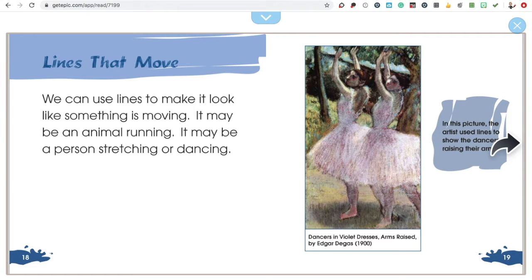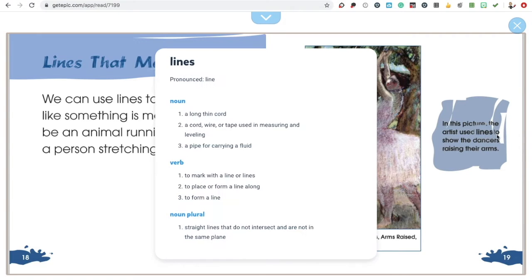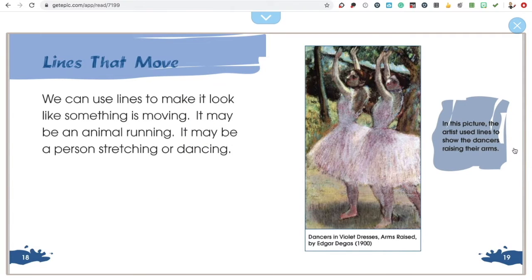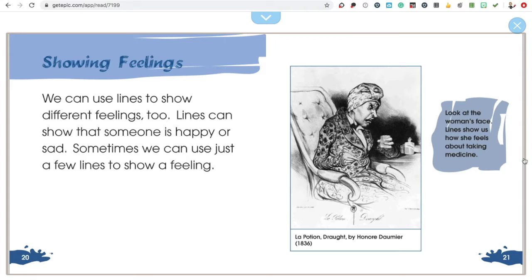We can use lines to make it look like something is moving. It may be an animal running. It may be a person stretching or dancing. We can use lines to show different feelings too. Lines can show that someone is happy or sad. Sometimes we can use just a few lines to show a feeling.